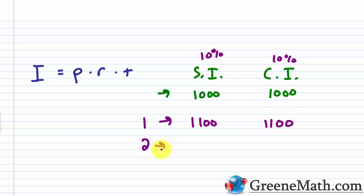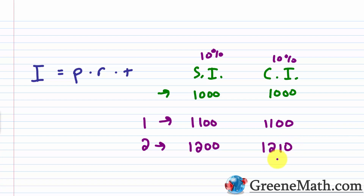At the end of year two there's a difference. With simple interest, I get paid on the original $1,000 again — 10% is $100 — so that account goes to $1,200. With compound interest, 10% is applied to the balance of $1,100, giving $110, so the balance becomes $1,210. The difference: $1,200 simple vs. $1,210 compound, because the $100 earned interest itself earned 10%, adding $10.